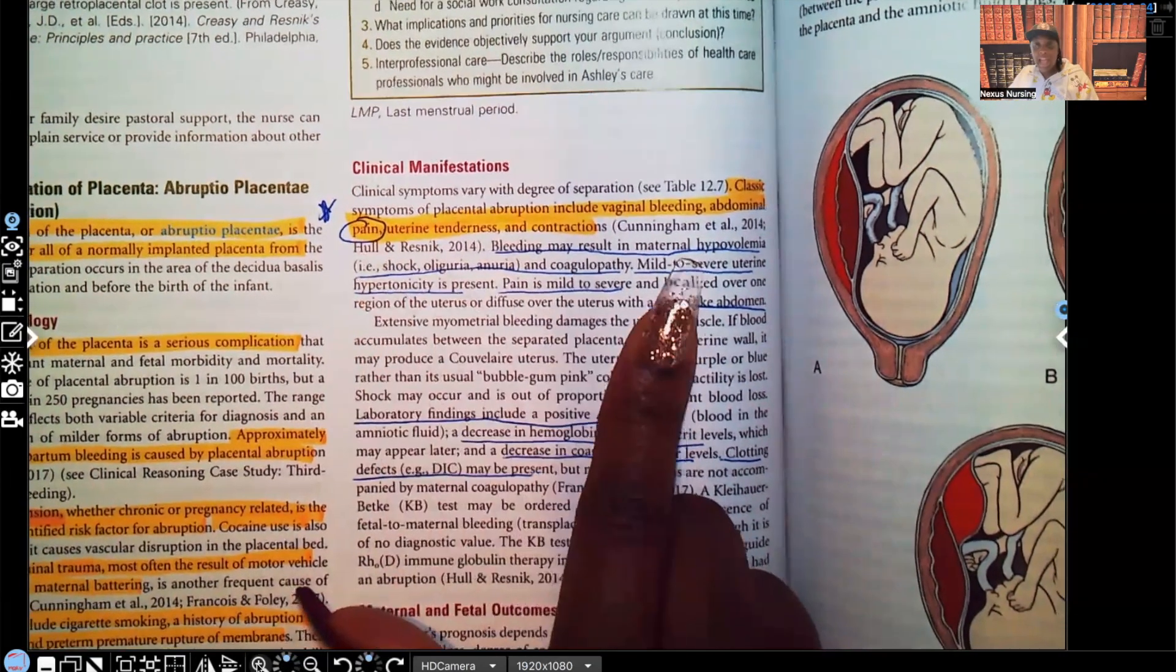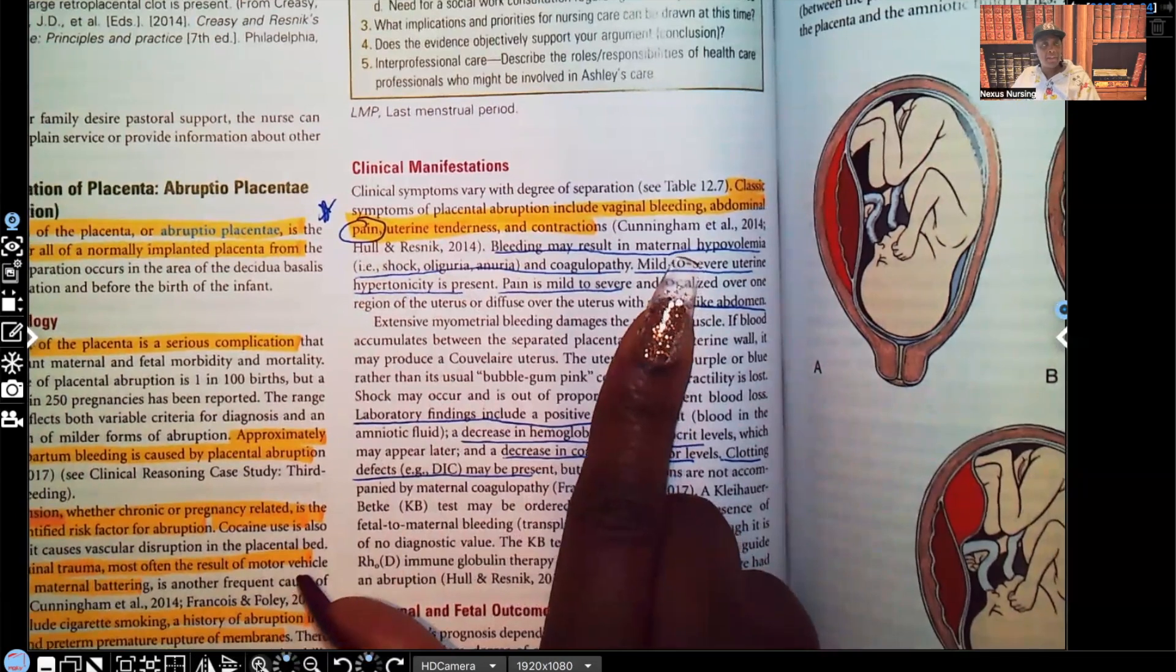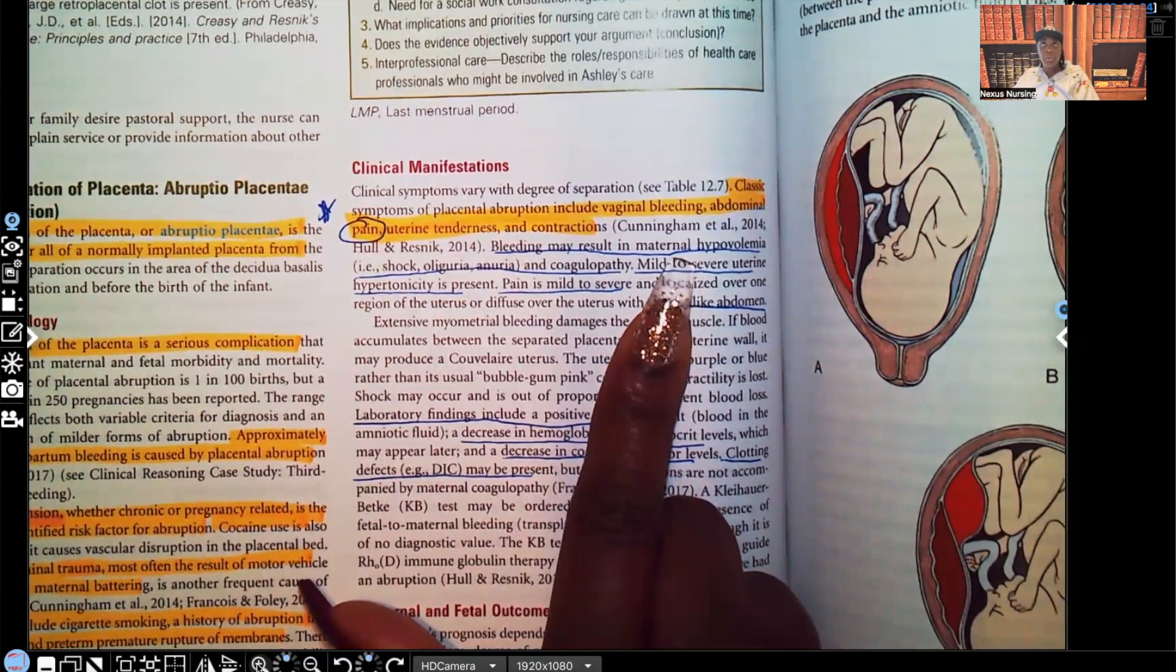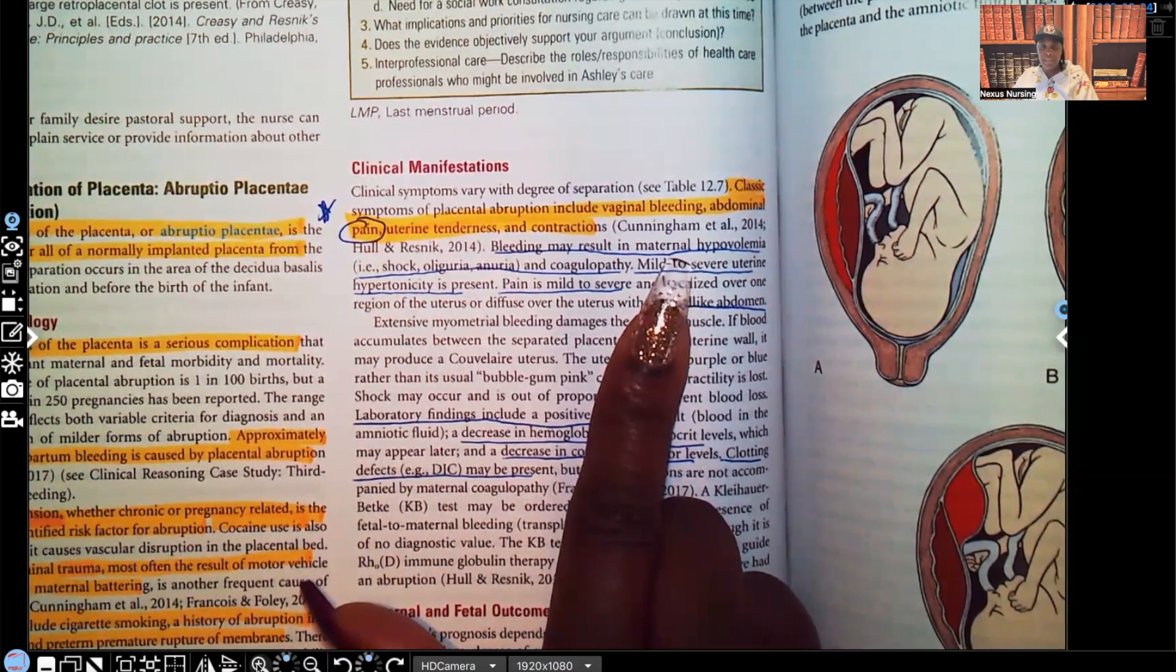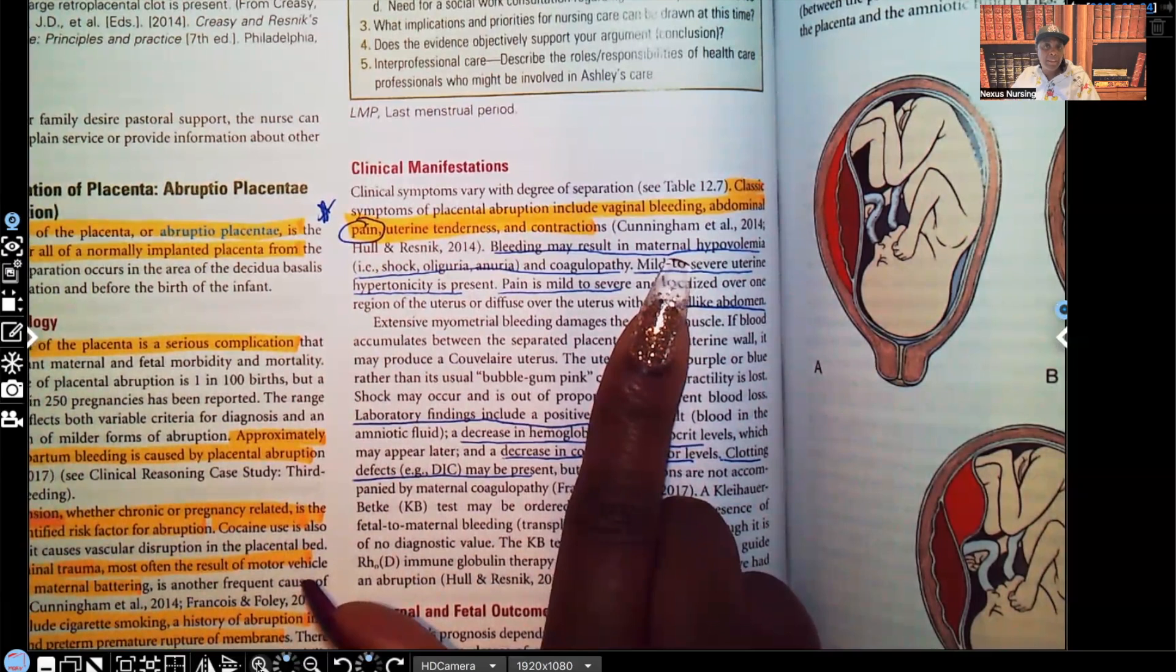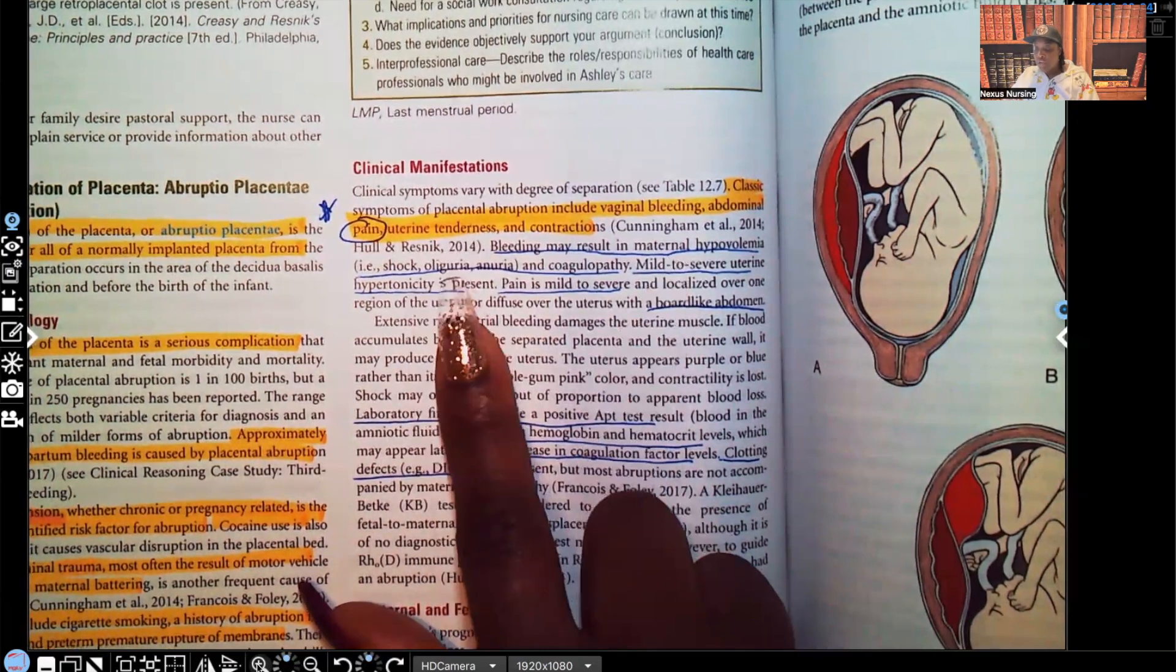Bleeding can result in maternal hypovolemia. Hypo, too little, volemia, fluid within the vascular space. Remember, it's that oxygenated blood in the mom's vascular space that is perfusing the whole body. So this mom can literally go into shock from all that bleeding. Shock, oliguria, anuria.